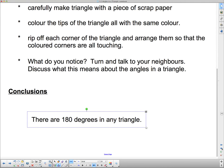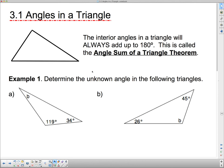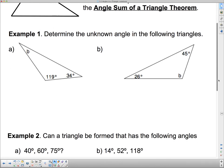Okay, so we're going to use that to do a few examples here. So this is the actual note: The angles in a triangle will always add up to 180 degrees. This is called the angle sum of a triangle theorem. And we're going to use the angle sum of a triangle theorem to determine the angles in these triangles.